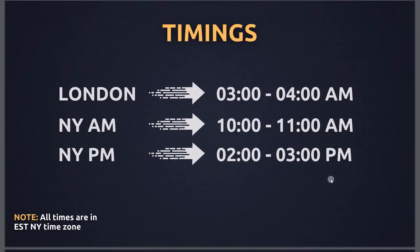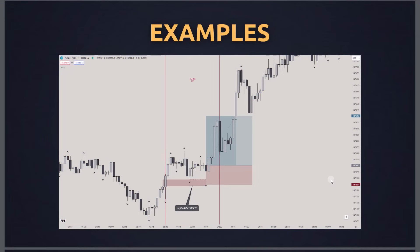The silver bullet timings are: London silver bullet — 3 to 4 AM; New York AM session — 10 to 11 AM; New York PM session — 2 to 3 PM. I only stick with these three because the more sessions you add, the more confused you'll be. You can trade the newer ICT silver bullet timings if you want, but I don't prefer them. All times mentioned are in EST, New York time zone.